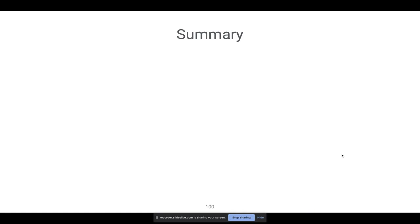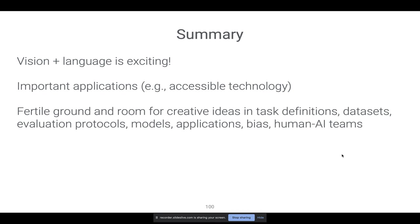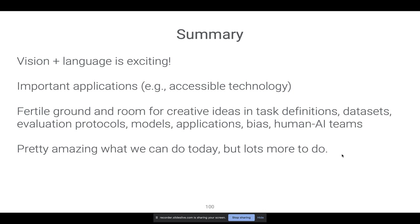To summarize: vision and language is an exciting space with important applications. It's very fertile ground with lots of room for creative ideas — task definitions, datasets, evaluation protocols, model architectures, applications, studying biases, human-AI teams. There's just a lot to be done and I think that's very exciting. It's pretty amazing — I'm still fascinated when I play with these demos, which is why I spent a good amount of time on them. I encourage you to do that as well. But it's still very easy to break these models, and there's lots more to be done.